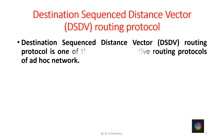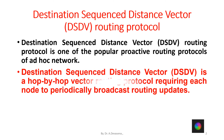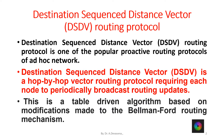DSDV routing protocol is one of the popular proactive routing protocols of ad-hoc networks. DSDV is a hop-by-hop vector routing protocol requiring each node to periodically broadcast routing updates. This is a table-driven algorithm based on modifications made to the Bellman-Ford routing mechanism.